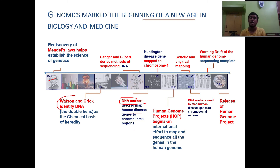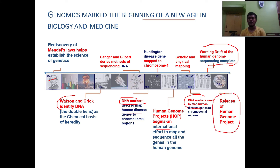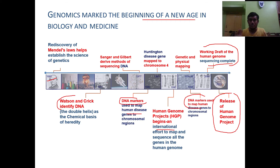DNA markers were used to map human disease genes to chromosomal regions. Then we move to the Human Genome Project (HGP), which began as an international effort to map and sequence all genes in the human genome, integrating all human genes into a single library. This was followed by genetic and physical mapping, use of DNA markers for mapping disease genes, drafting human genome sequences, and finally the release of the Human Genome Project. DNA sequencing has been strongly emphasized throughout the development of genomics.